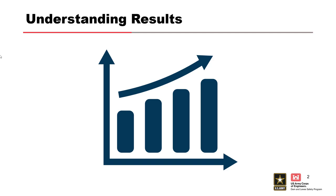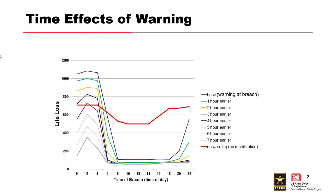I'm going to put some images up — graphs, plots, tables — ask you some questions, and just shout out answers, raise your hand, however you want to do it. What do you see here? Everyone see this alright? This is life loss — a life loss estimate. This is time of breach, so time of day that the breach occurs, all the way from 12 a.m. to 11:59 p.m., and each one of these lines represents a warning relative to that breach zero time.